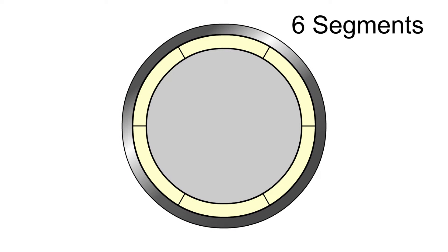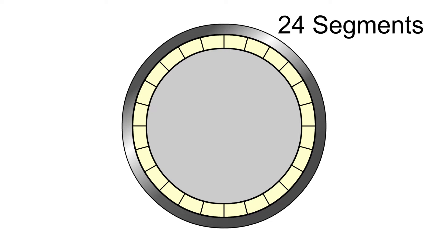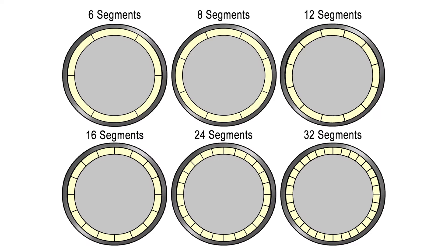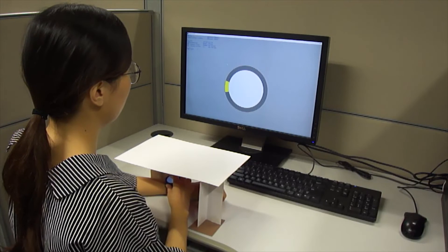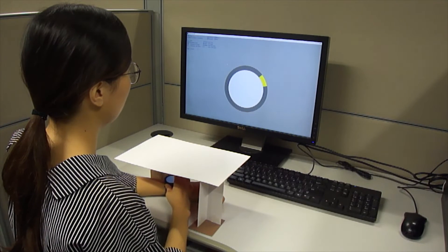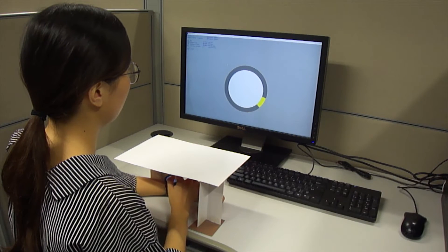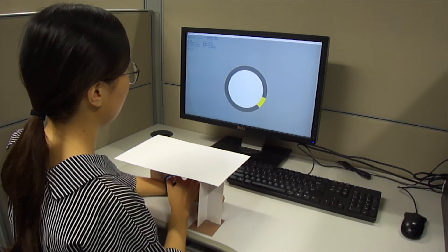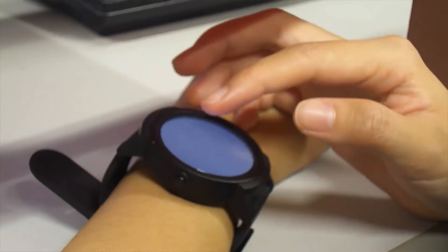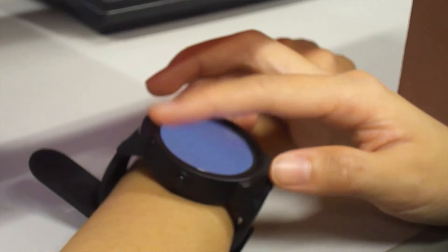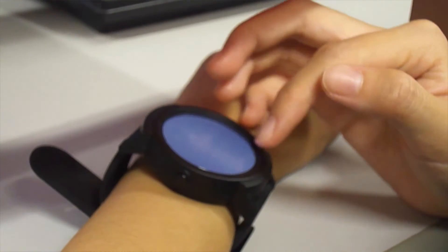We divide the circular bezel region into different numbers of segments to study the effect of different segment sizes, and study commonly used layouts and their subdivisions. A study was conducted to investigate user performance of eyes-free Bessel-initiated swipe on a round smartwatch with six different division layouts. Our results showed that the number of Bessel segments significantly affects accuracy.